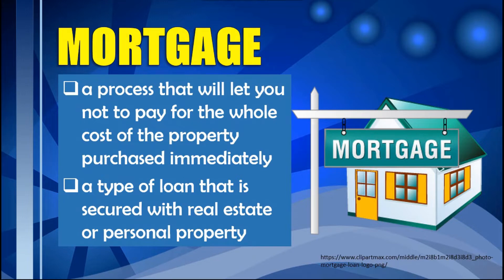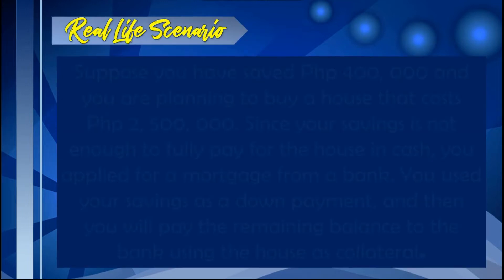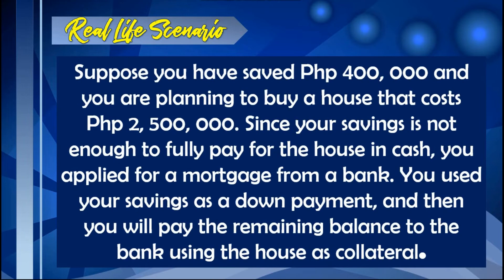To further illustrate this, let us have a real-life scenario. Suppose you have saved $400,000 and you are planning to buy a house that costs $2.5 million. Since your savings is not enough to fully pay for the house in cash, you applied for a mortgage from a bank. You used your savings as a down payment and then you will pay the remaining balance to the bank using the house as a collateral.